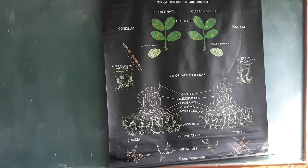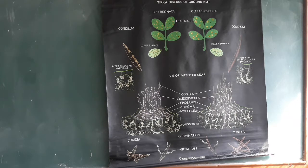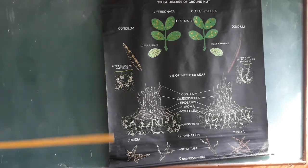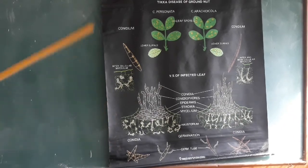The disease cycle: the disease is caused by Cercospora arachidicola and Cercospora personata. Spores are disseminated by wind currents and can attack new crops. They can also remain viable in the soil for a long time and attack succeeding crops. When conditions become favorable, the fungus present in soil produces spots and attacks the next crop.